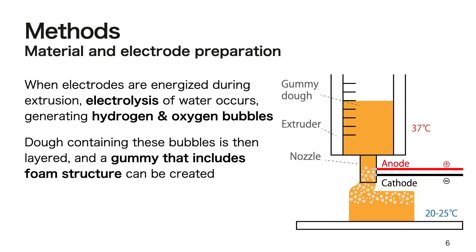In this method, electrolysis is performed at the nozzle through embedded electrodes. When the electrodes are energized during extrusion, electrolysis of water occurs, generating hydrogen and oxygen bubbles. The material containing these bubbles is extruded from a heated extruder and then cooled at room temperature to gelatinize.